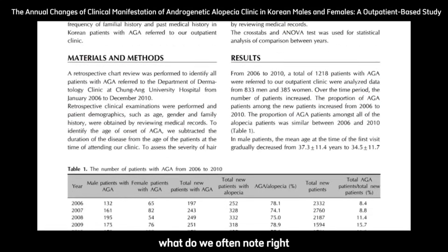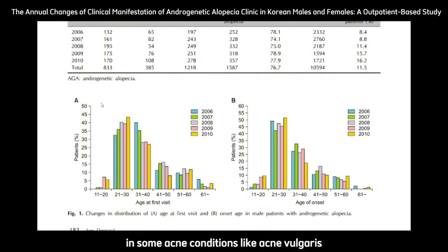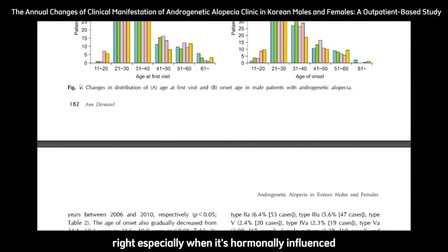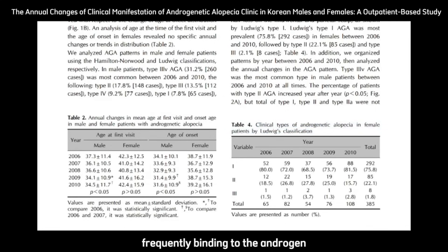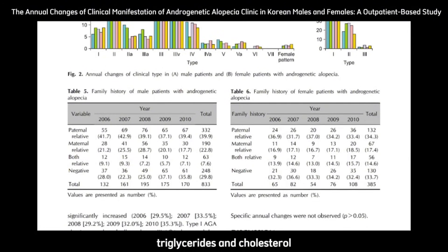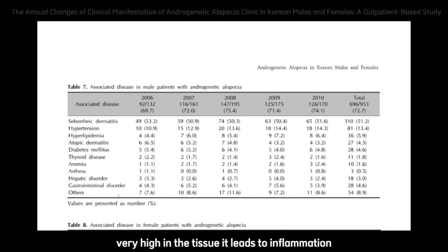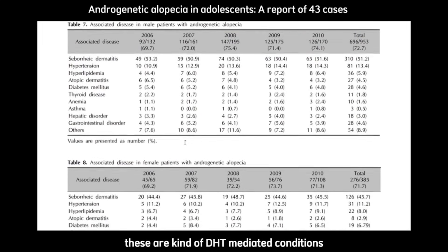In seborrheic dermatitis, we often note an oily scalp with itchiness, scaling, and flaking. In hormonally influenced acne conditions like acne vulgaris, we have DHT or 5-alpha reductase activity going on in the sebaceous glands, such that DHT frequently binds to the androgen receptors there, causing those sebaceous glands to produce more sebum — sebum that tends to be higher in triglycerides and cholesterol. When this sebum is very high in the tissue, it leads to inflammation, itchiness, and the formation of acne. These are kind of DHT-mediated conditions.